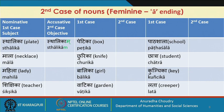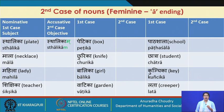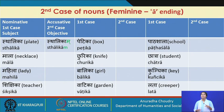Now let's do some practice on the feminine ā-ending words. Please also do the physical action as this will teach your body that the object case gets M. Sthalika → sthalikaam, mala → malam, mahila → mahilam, shikshika → shikshikam, petika → petikam, churika → churikam, balika → balikam, vatika → vatikam, patashala → patashalam, kunchika → kunchikam, lata → latam.